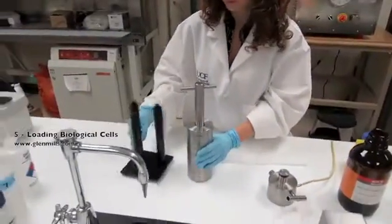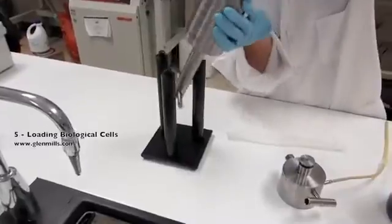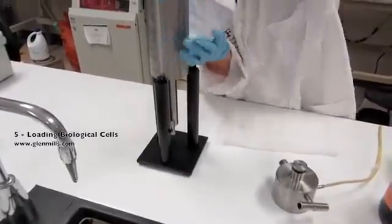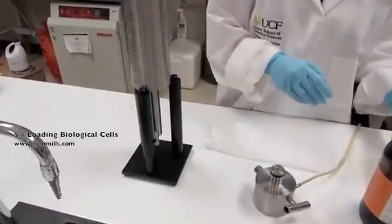Flip the unit over and place these two parts on the stand between the three posts. Fill the cell suspension until about one inch from the top.